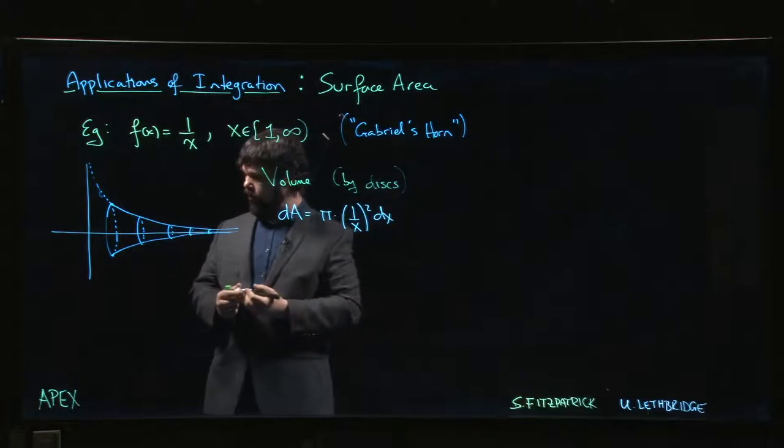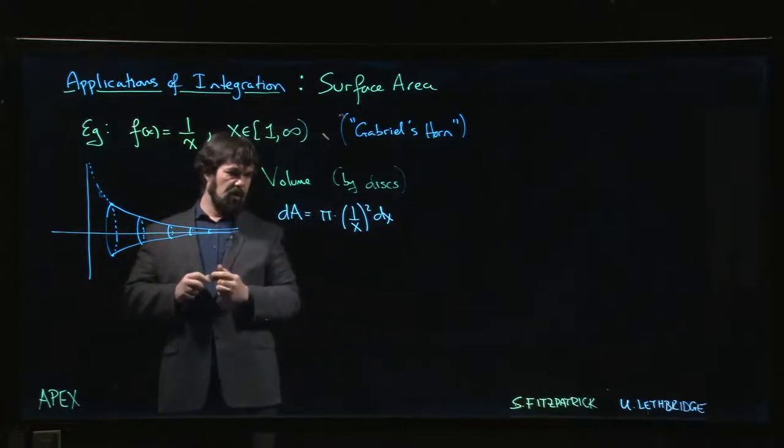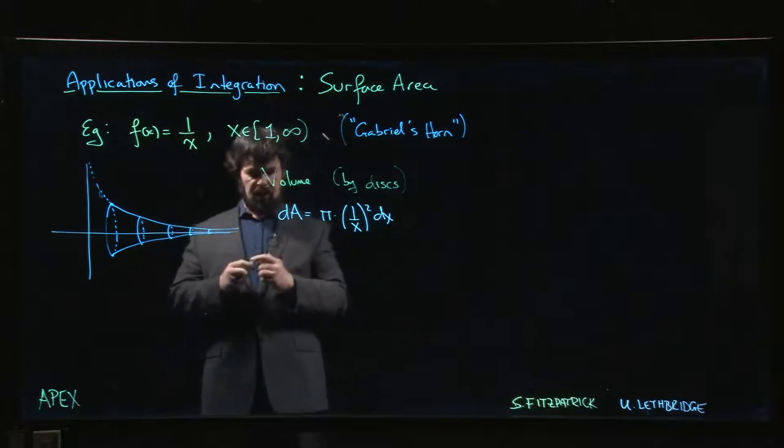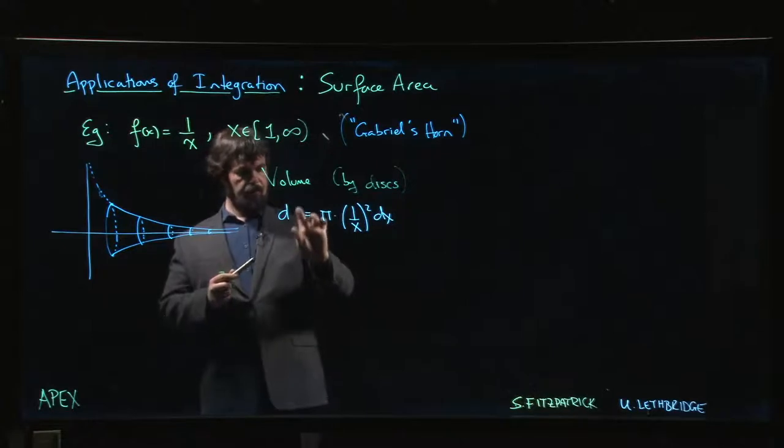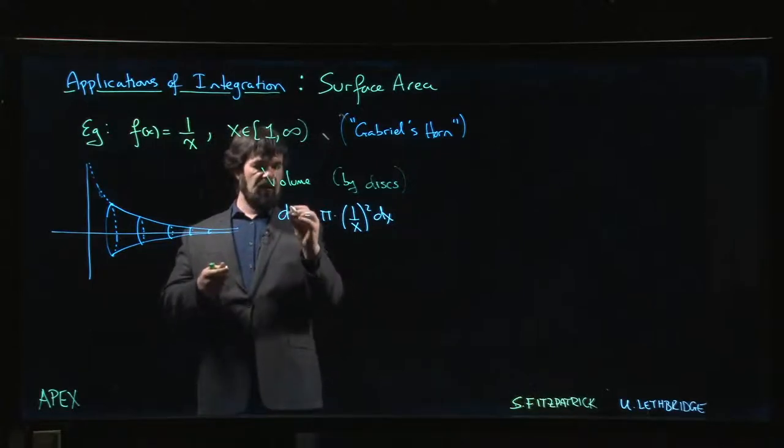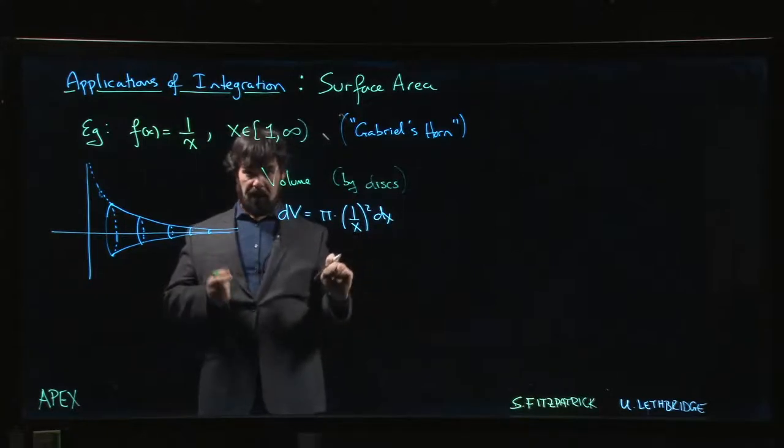So there's the area of our disk, πr², we thicken it to get that dx. Actually, once we thicken this, I should not say d area, sorry we've been doing a lot of surface area. That's the infinitesimal volume, because we have the area, we thicken by dx, that's our infinitesimal volume.